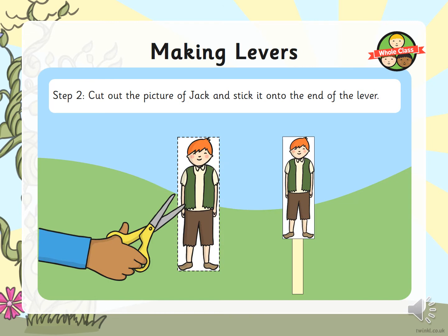Then you need to draw a picture of Jack from Jack and the Beanstalk onto the paper, colour it in, cut it out, and stick it on the end of the lever.